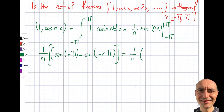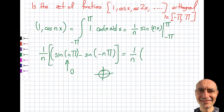What is sine of n·pi? For n=1, sine of pi is 0. For n=2, sine of 2pi is 0. For n=3, same thing — 0. Regardless of the integer value of n, sine of n·pi is always 0. Similarly, sine of minus n·pi is also 0 since pi and minus pi are symmetric points on the sine curve. So we get 0 minus 0, which equals 0. Case one checks out — the function 1 is orthogonal to cosine of nx on this interval.